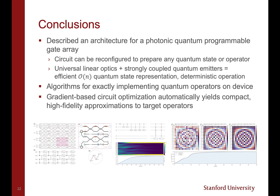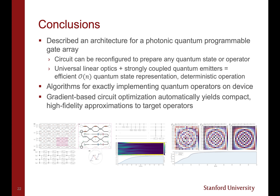To summarize, in this talk I described a photonic architecture for a quantum programmable gate array capable of implementing arbitrary quantum states, operators, and computations. I showed that the device can be programmed to implement exact quantum states and operators, and I described a gradient-based circuit optimization routine which automatically discovers compact, high fidelity approximations to target quantum operators. Thank you for your attention, and this concludes my talk.